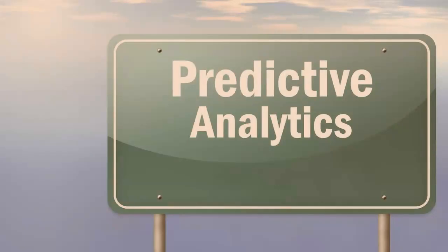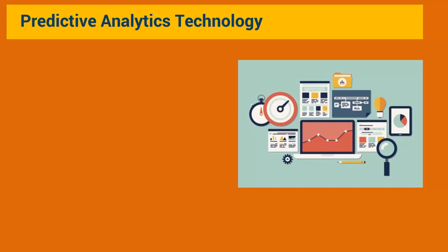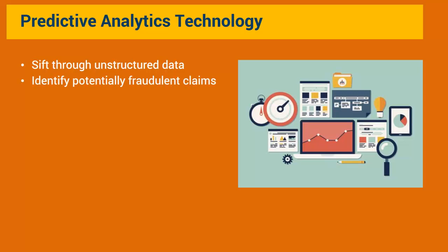We have looked at social network analysis as one method of fraud detection. Let us now look at a second method: predictive analytics. Predictive analytics includes the use of text analytics and sentiment analysis to look at big data for fraud detection. Predictive analytics technology is used to sift through unstructured data, identify potentially fraudulent claims, and expedite the payment of legitimate claims.